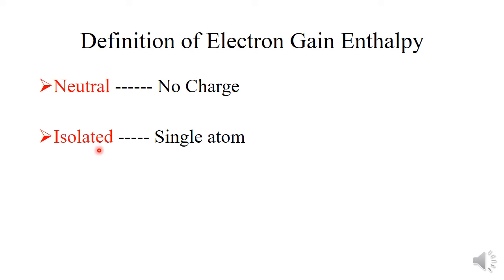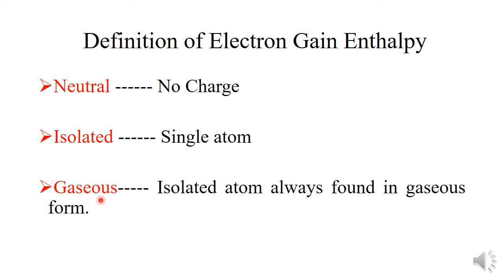Second is isolated, which means a single atom. It is better to study any property on the isolated atom rather than on a group of atoms, because in a group of atoms the behavior of the atom will change. Third is gaseous — an isolated atom is always found in the gaseous form. So during the addition process, the atom should be neutral, isolated, and in gaseous form.